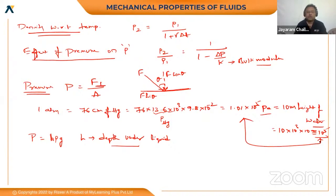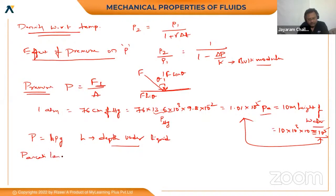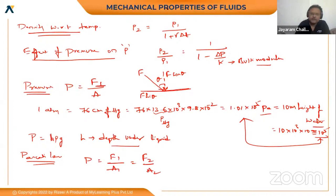According to Pascal's Law, pressure P is equal to F1 by A1, which is equal to F2 by A2. So F1 by A1 equals F2 by A2. This is the general Pascal's Law derivation.